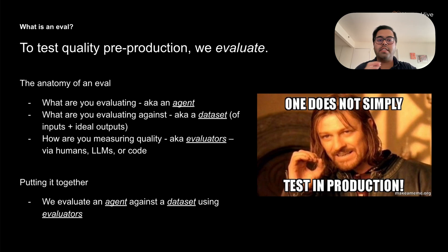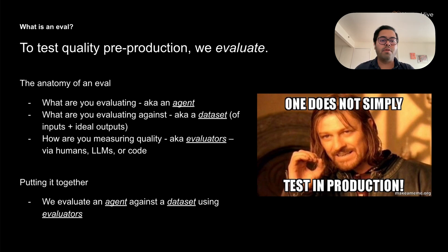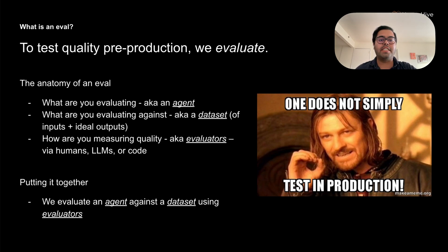The second component — and the most important in my opinion — is a dataset. This is what you're evaluating against, and this is where I see a lot of teams stumble. They'll show me 50 queries, all handwritten by developers, and say 'this covers all our use cases.' But does it really? Your dataset needs to include both your inputs — the kinds of queries your system will actually receive in production — and the ideal outputs, what good responses should look like. These need to cover not just the happy path, but also the tricky edge cases where things might go wrong. These examples really need to be written by domain experts who understand the necessary business context to define what the requirements for this agent should be.